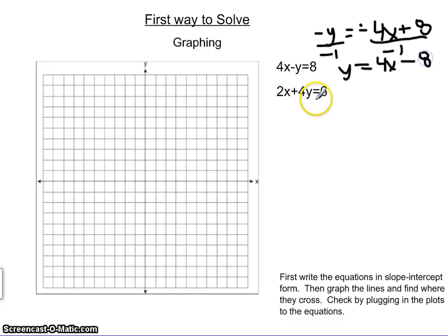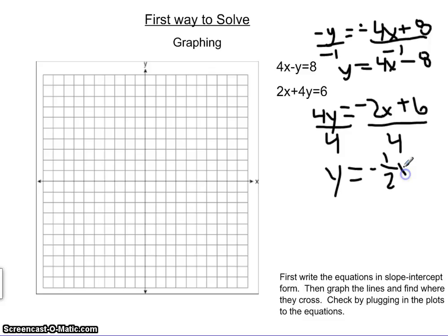Alright, now the second equation, we subtract the 2x and get 4y equals negative 2x plus 6, and then we divide both sides by 4. We should get y equals negative 1 half x plus 1.5.